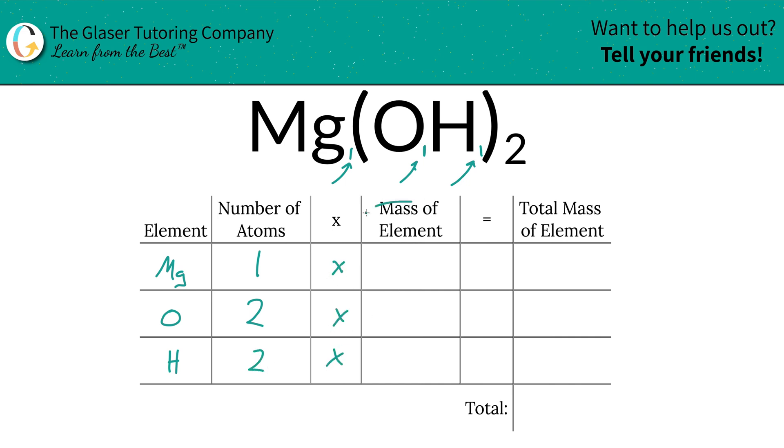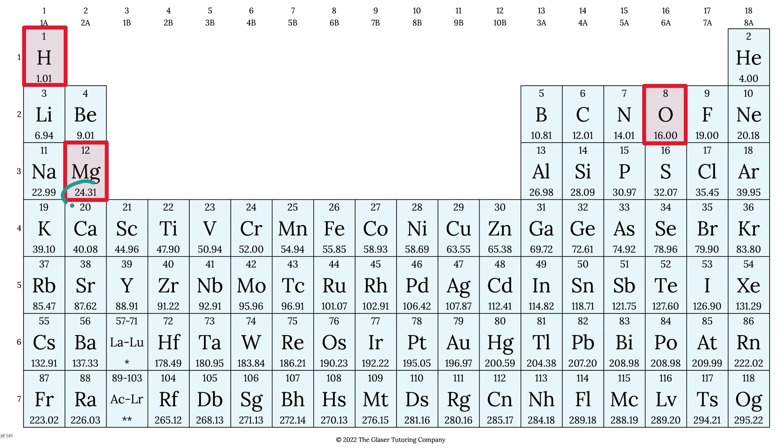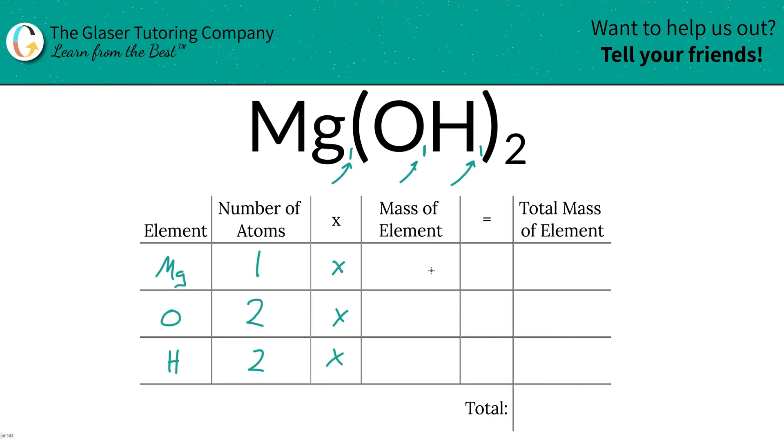Then you're going to take those number of atoms and multiply it by the mass of each particular element. That's where the periodic table comes into play. So magnesium's mass is 24.31, hydrogen is 1.01, and oxygen is going to be 16. So let's write them in. So we've got 24.31 for magnesium, oxygen was 16, and hydrogen was 1.01.